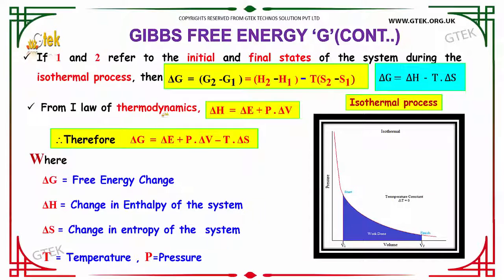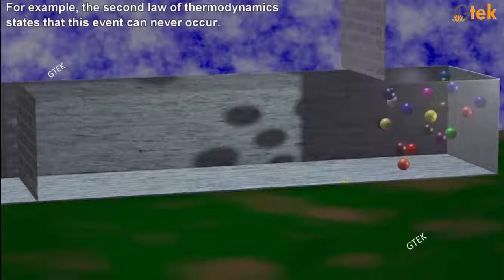From the first law of thermodynamics, delta H equals delta E plus P times delta V. Replacing this equation, you get delta G equals delta E plus P times delta V minus T times delta S.